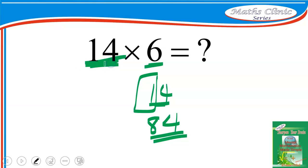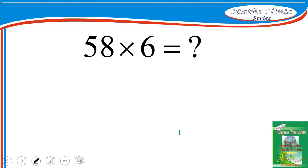Take note: anytime you multiply 6 by any even number, the last digit of the even number will be the last digit of your answer — as simple as that. Let's take another example: 58 times 6.